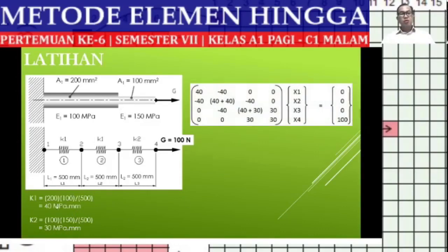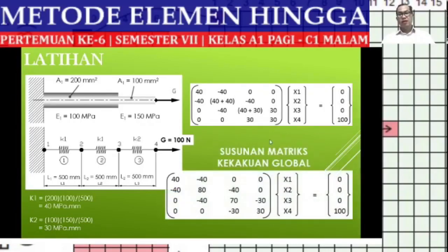Next we assemble the global stiffness matrix as follows: 40, -40, -40; 40 plus 40 (since K1 for elements 1 and 2 is the same), -40, -40, 40; then adding the third element where K = 30: 30, -30, -30, 30. So we obtain the complete global stiffness matrix.